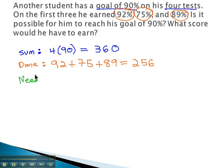So what does he need in order to reach his goal of 90%? Well, 360's the total. Subtract out what he has already, 256, and what we find out is that he needs 104%.